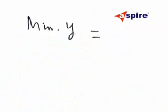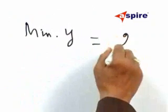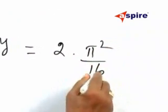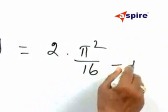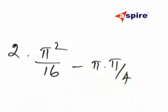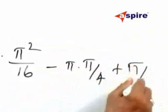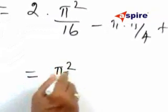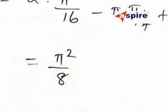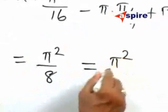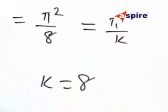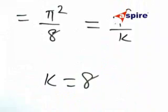Therefore the minimum value of y will be, when z equals π by 4: twice into π by 4, π squared by 16, minus π into π by 4, plus π by 4. This is given to be equal to π squared by 8 on simplification. But the problem says this is equal to π squared by k, therefore k should be equal to 8, or choice 3 is correct.